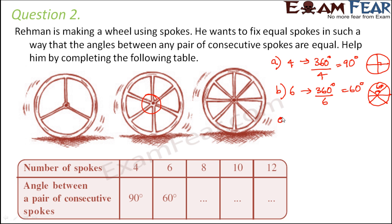Now when you divide it into 8 spokes, then it becomes 360 divided by 8 which is equal to 45 degree. So in this fashion you can find out the values of the rest as well.